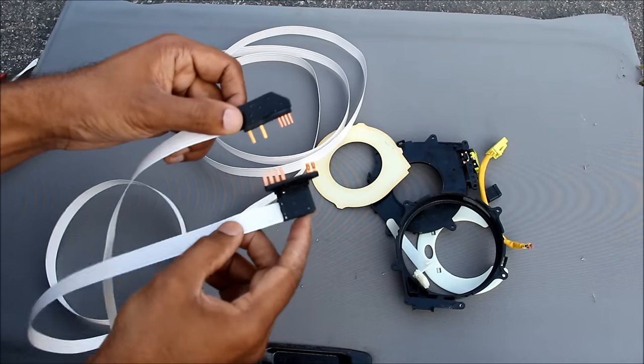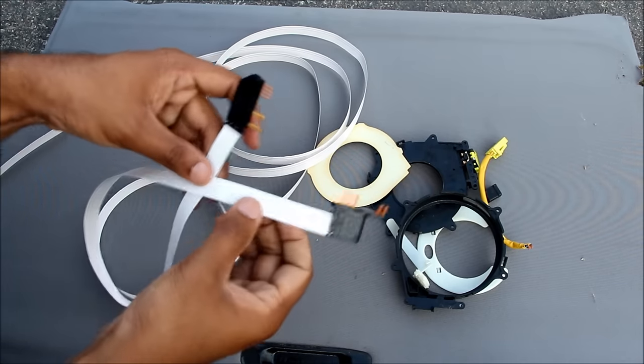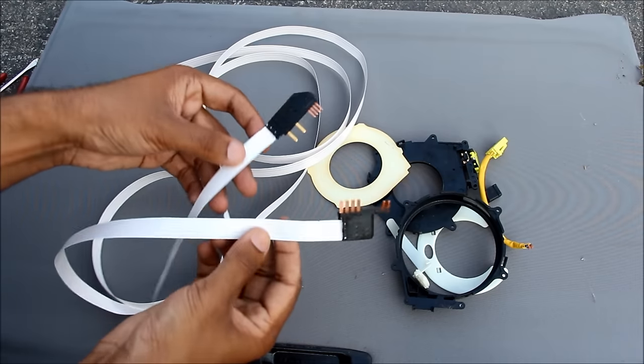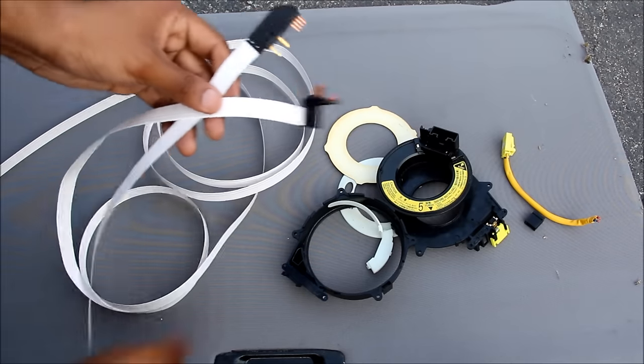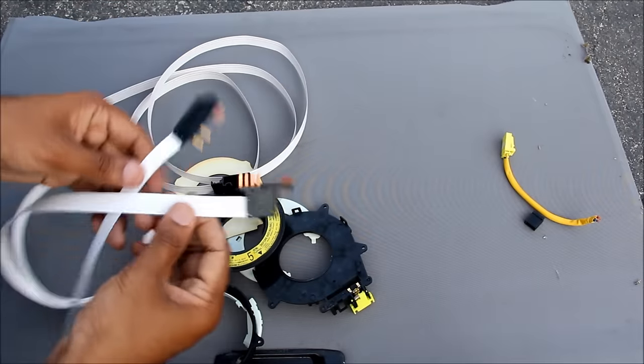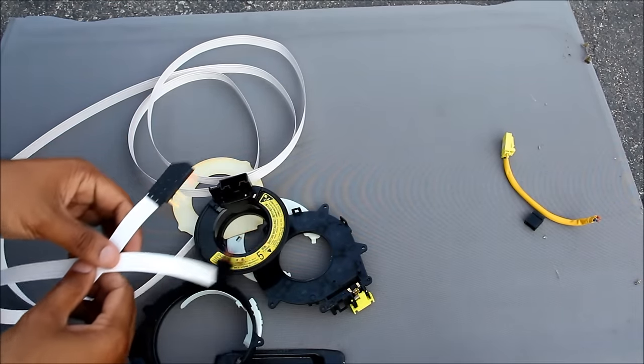Now this is just a basic clock spring with wiring for the cruise control horn as well as the airbag. Modern cars will have a much more complicated clock spring with more wiring for things like audio controls and bluetooth. So other than a couple of cheap plastic pieces and a really long ribbon cable, this is all that's responsible for controlling all the electronics in your steering wheel.